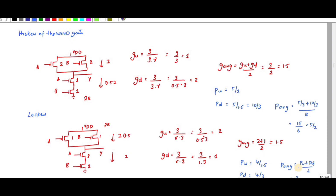So you can see that since it is a high skew NAND gate, the logical effort of the NMOS is greater than that of the PMOS. For low skew, you can see the logical effort of the PMOS is greater than that of the NMOS.